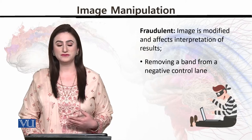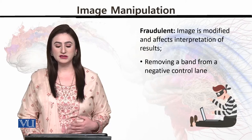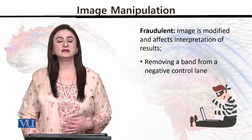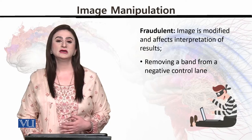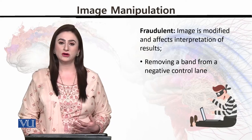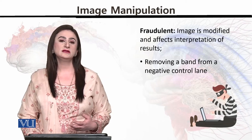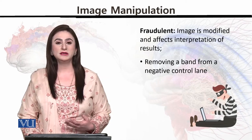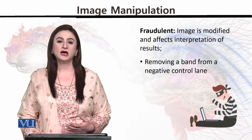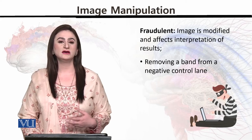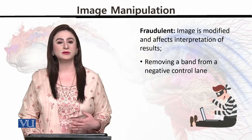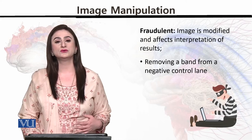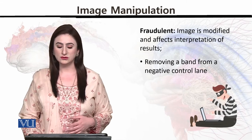Then there is fraudulent image manipulation — images are modified to affect the interpretation of results, such as removing a band from the negative control lane. Science and technology کی research کے اندر آپ claim کرتے ہیں کہ یہ آپ نے خود بنایا ہے جبکہ آپ نے اس کے اندر صرف کوئی ایک چیز بدل کر اس کو as it is لے لیا ہوتا ہے اور اس کا کوئی source mention نہیں کیا ہوتا۔